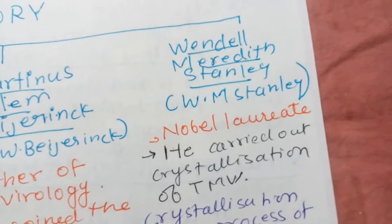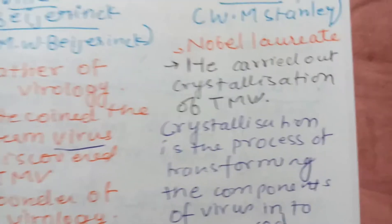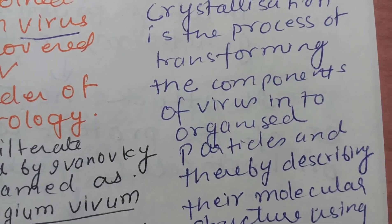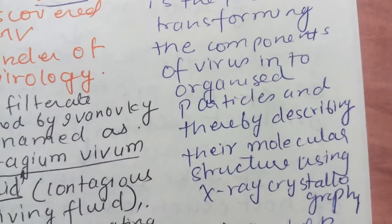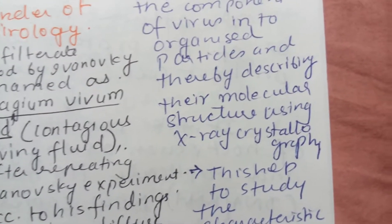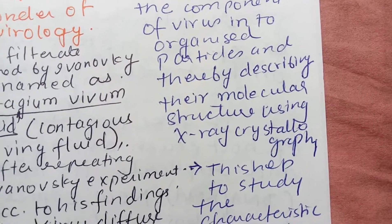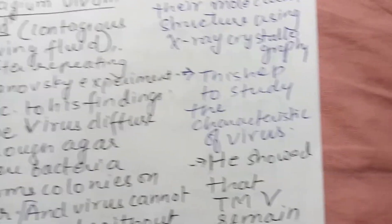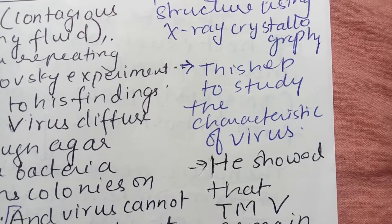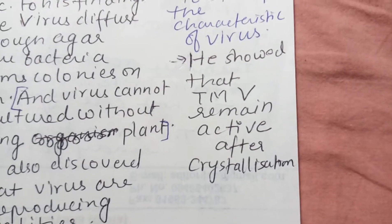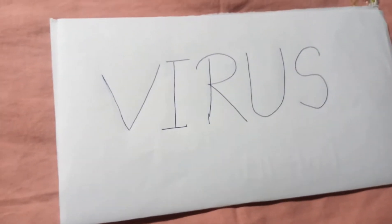Now we come to Stanley. He carried out crystallization, which is the process of transforming components of a virus into organized particles and thereby describing their molecular structure using X-ray crystallography. This method allowed study of the molecular structure of the protein and genetic material present in the virus. The study helped identify the characteristics of virus, and he showed that TMV remains active even after crystallization, for which he received the Nobel Prize.